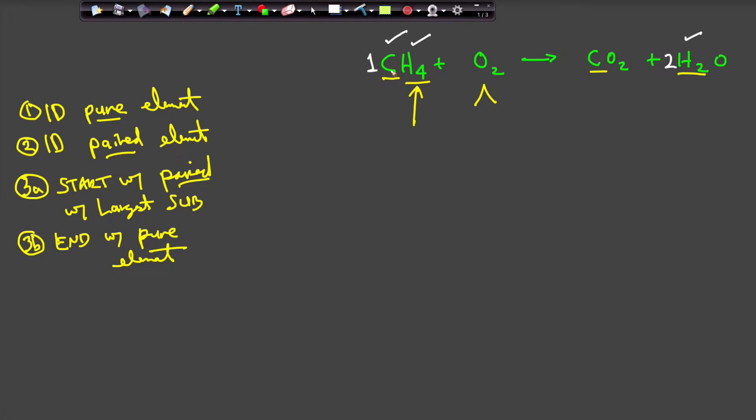Then necessarily the carbon must be locked at one. Because the one is also in front of the C. And if I have one carbon on this side I must have only one on that side. And so now carbon is locked. So everything is now balanced except for oxygen.